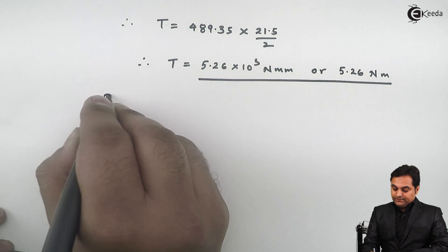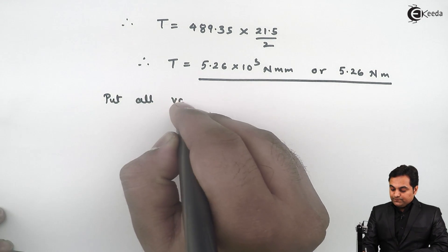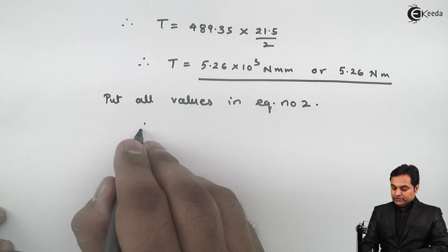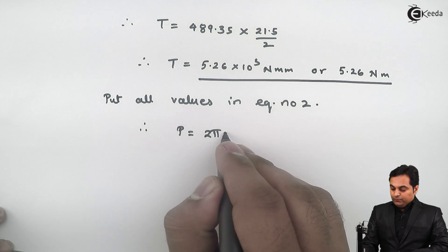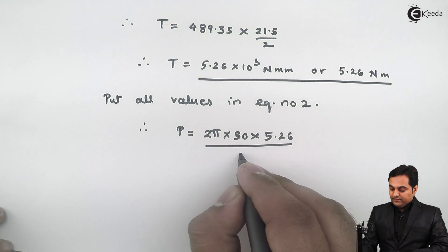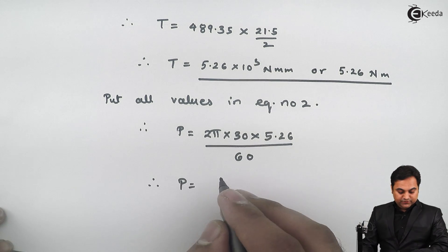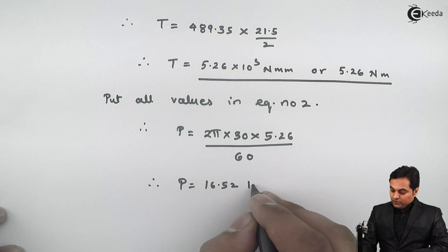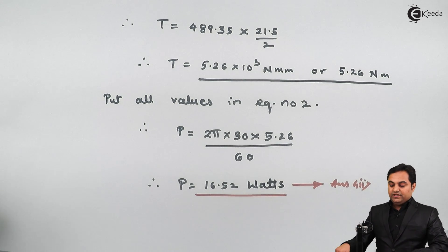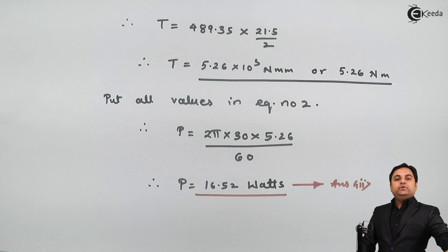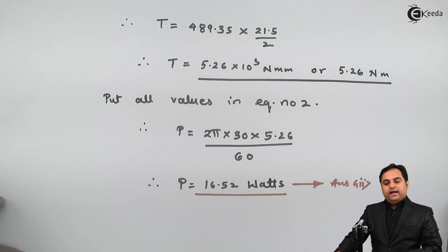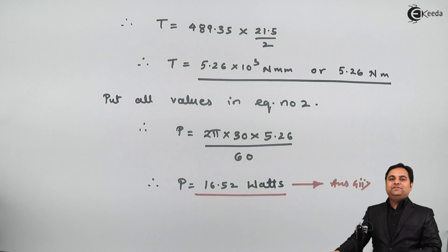Substituting all values into the power equation: Power = 2π × 30 × 5.26 / 60 = 16.52 Watts. This is our second answer. In this video we calculated two unknowns: the efficiency of the screw thread (37.81%) and the power transmitted by the screw (16.52 W). With this we complete the problem. Thank you.